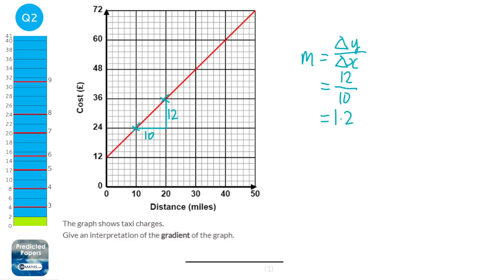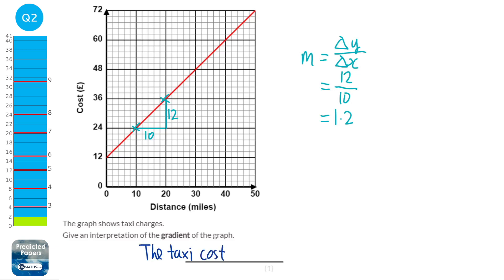A gradient represents the amount of change in y per one change in x. So for every one mile we travel, it's going to cost 1.20 more. The interpretation we give for this context — because this is about taxis — is that the taxi will cost £1.20 or 120 pence per mile. That's true for the gradient in any context: for every one of this, how much the y increases by.